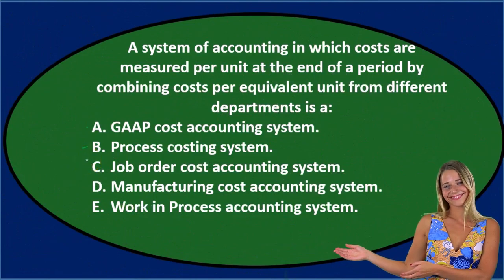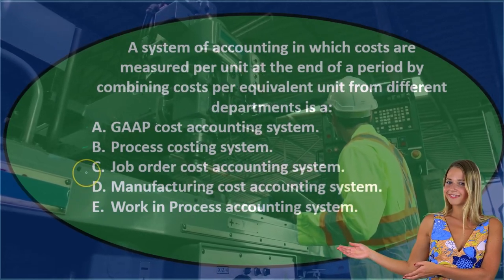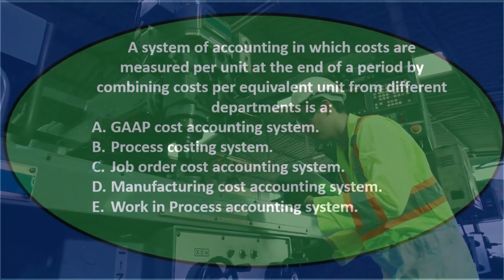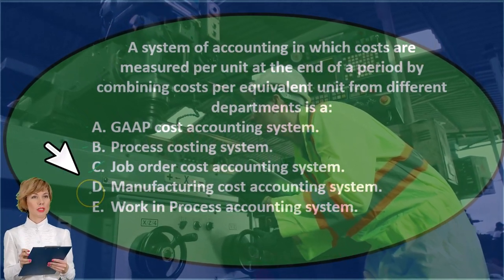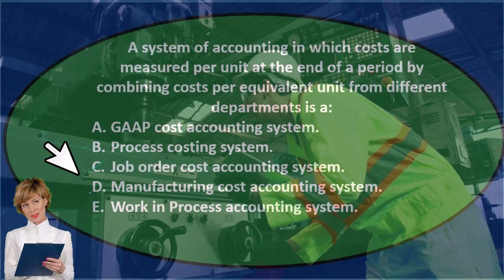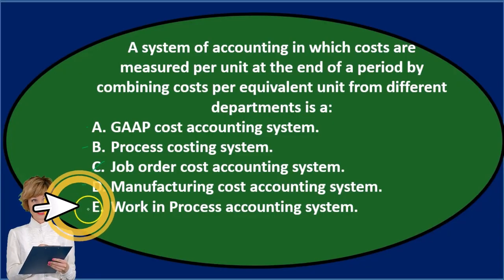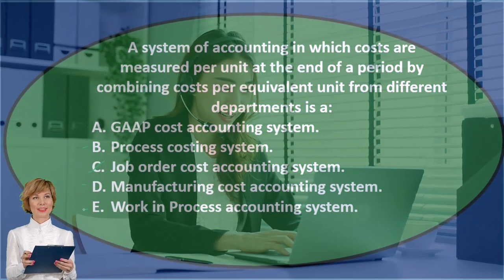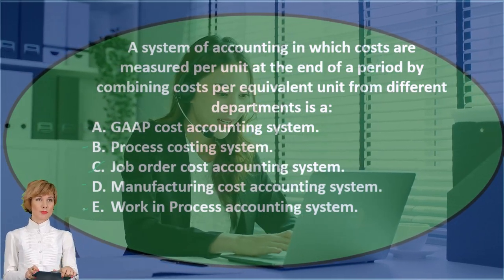Often when we're considering a manufacturing type of process and one answer is a process cost system and another is a job order cost system, it looks like it's more of a process cost than a job cost. Option D, manufacturing cost accounting system, might seem true. Option E, work in process accounting system, could also have some truth to it. Multiple choice questions require us to find the most correct answer.